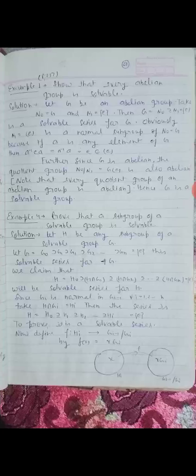Now we will see a theorem: every abelian group is soluble. Let G be an abelian group and take N0 = G and N1 = E. Then G = N0 ⊇ N1 = E is a soluble series for G. Obviously N1 = E is a normal subgroup of N0 = G, because for any element A of G, A⁻¹EA = A⁻¹A = E, which belongs to E. Further, since G is abelian, the quotient group N0/N1 = G/E is also abelian. Note that every quotient group of an abelian group is abelian, hence G is a soluble group.